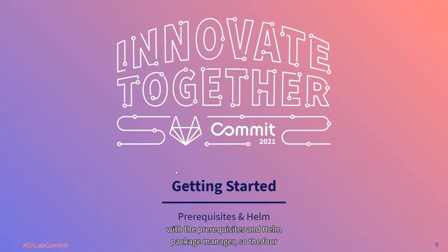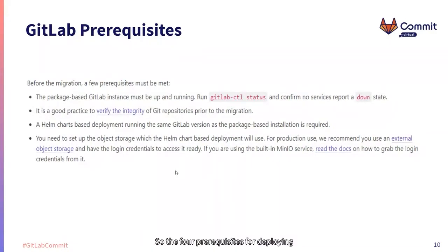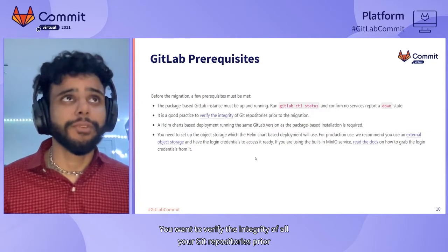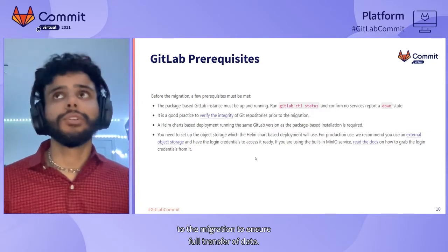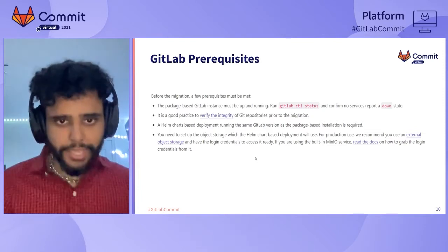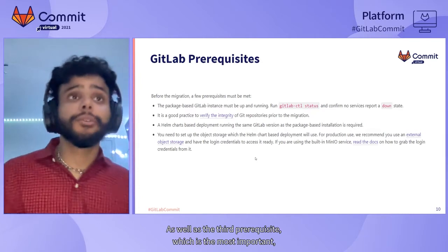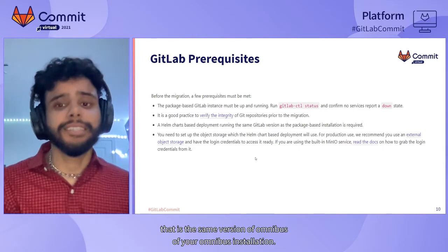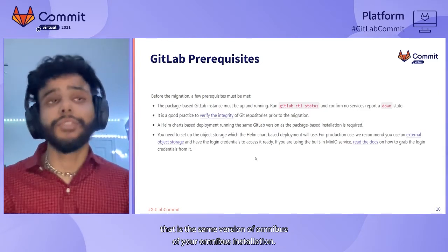Getting started with the prerequisites and Helm package manager. The four prerequisites for deploying GitLab into a Kubernetes cluster: first, ensure that you actually do have a GitLab instance running — not in a down state, up and running and good to go. You want to verify the integrity of all your Git repositories prior to migration to ensure full transfer of data. The third and most important prerequisite is to make sure that you have a deployment of GitLab in your cluster that is the same version as your Omnibus installation.